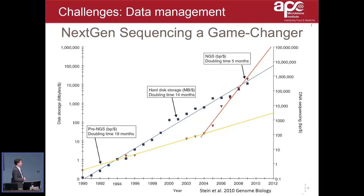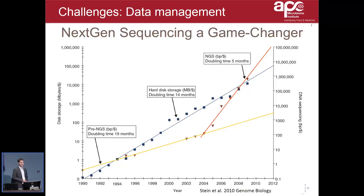Data management is an obvious challenge. These machines produce an enormous amount of data. This plot shows that next-generation sequencing data — the number of base pairs you can get per dollar — used to double every 19 months, but NGS now doubles every five months, outpacing Moore's law. Hard disk storage does also double, but not as fast as sequencing data is generated, so we run into more and more issues with storing the data.